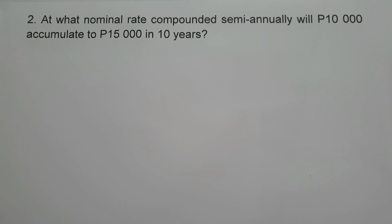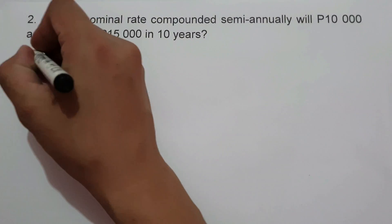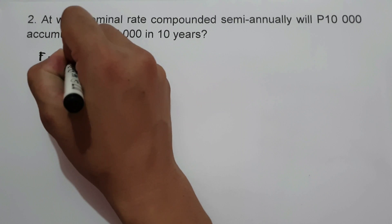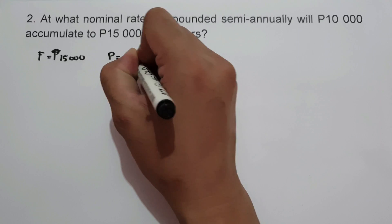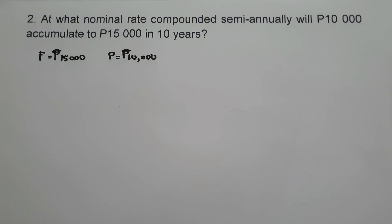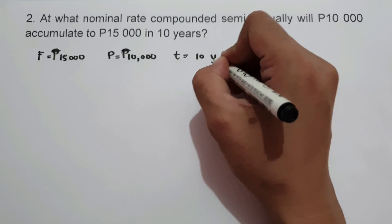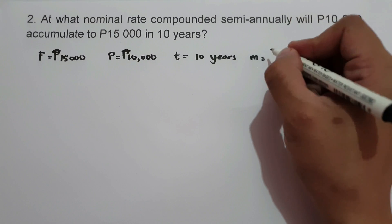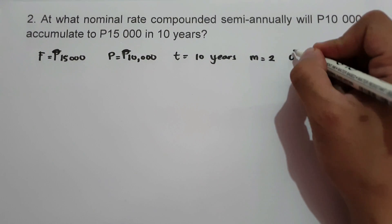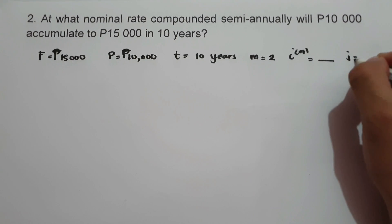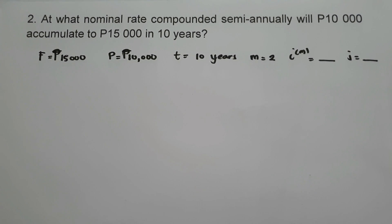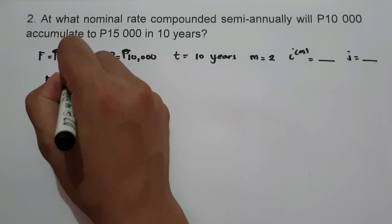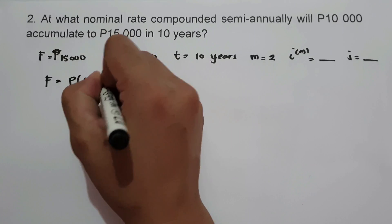On example number two, at what nominal rate compounded semi-annually will P10,000 accumulate to P15,000 in 10 years? To find the nominal rate, let us identify the given: future value is 15,000, principal is 10,000, time is 10 years, and M — the frequency of conversion — is 2 since it is compounded semi-annually. We are looking for the nominal rate and will also find J, the interest rate per conversion period. We use the formula F equals P times the quantity of 1 plus J raised to M times T.